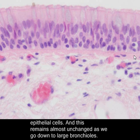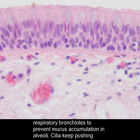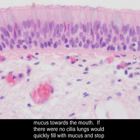This lining remains almost unchanged as we go down to large bronchioles; however, the number of goblet cells decreases. Ciliated epithelial cells can be present even in respiratory bronchioles to prevent mucus accumulation in alveoli. Cilia keep pushing mucus towards the mouth.